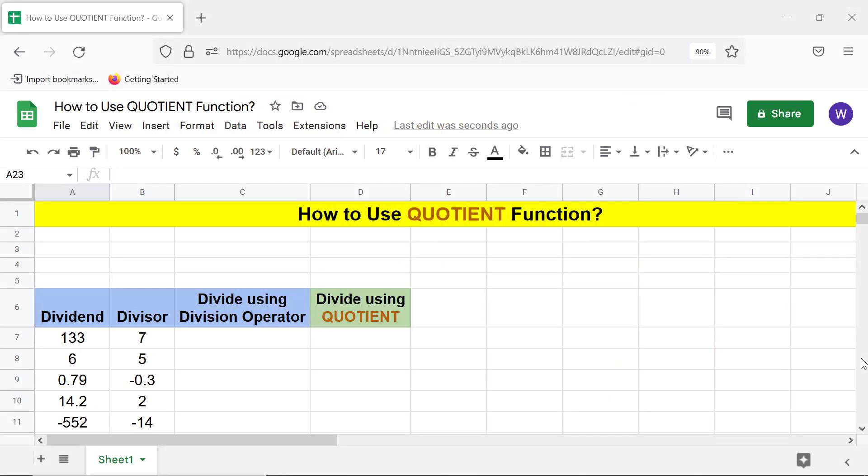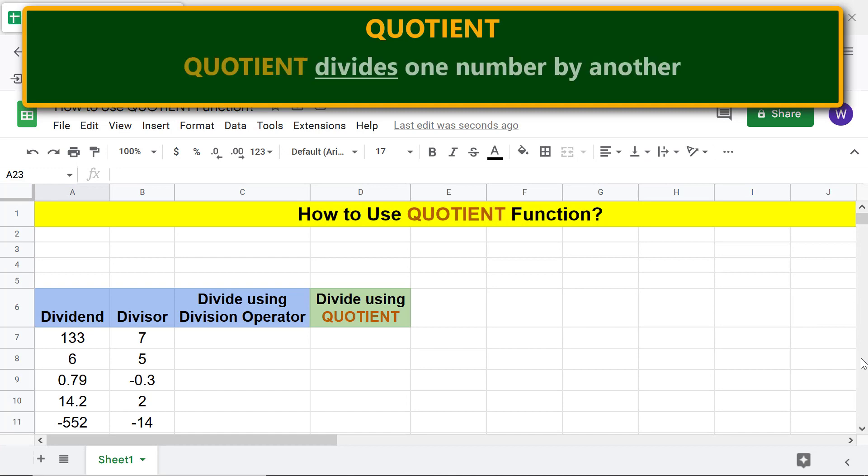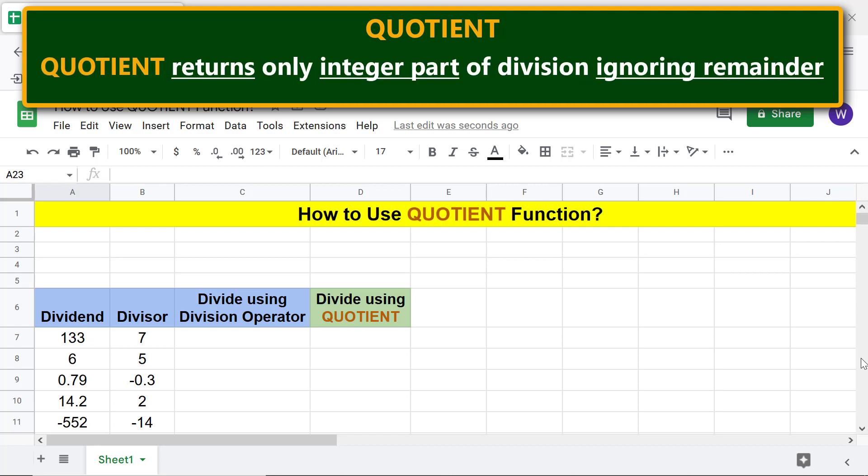Hi folks. Greetings. Welcome to this tutorial on using the Quotient function. Let's begin with an intro to Quotient. Quotient divides one number by another. Quotient returns only the integer part of division, ignoring the remainder.